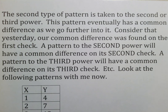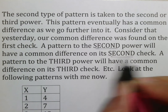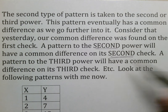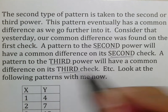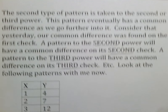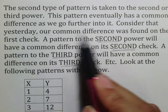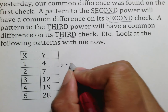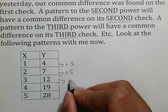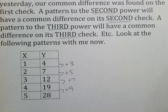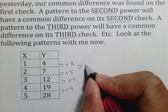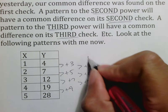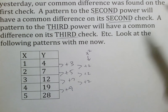The second type of non-linear pattern involves a variable taken to a second or third power. This pattern eventually has a common difference as we go further. Yesterday, our common difference was found on the first check — that's linear. A pattern raised to a second power will have a common difference on the second check. A pattern to a third power will have a common difference on the third check. So: first check → linear; second check → x squared; third check → x cubed. Looking at an example: differences are 3, 5, 7, 9 — not constant. Second-level differences are all 2, so we use x squared.